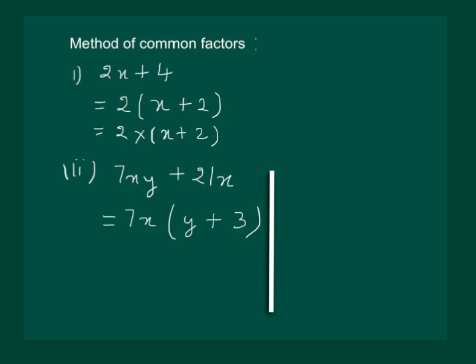Here itself, we would like to explain to you what happens when we take something common. Like in the second example, when we take 7x common to find the remaining terms, we do 7xy divided by 7x. That is, we take the first term of the expression and divide it by the number we have taken out common. Then what we get is 7 and 7 get cancelled. Similarly, x gets cancelled and we are left with y. So only y remains and in the bracket we write y.